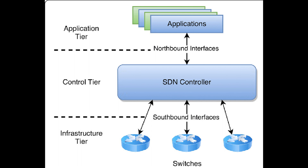Software defined networking combines network and application services into centralized platforms that can automate provisioning and configuration of the entire infrastructure. It reduces IT costs through implementation of cloud architectures and provides admins with a centralized control console that can direct switches and deliver network services wherever needed, regardless of specific connections between servers and devices, without the need to physically touch the switches. It's good for things like troubleshooting, meeting new business requirements, and so forth.